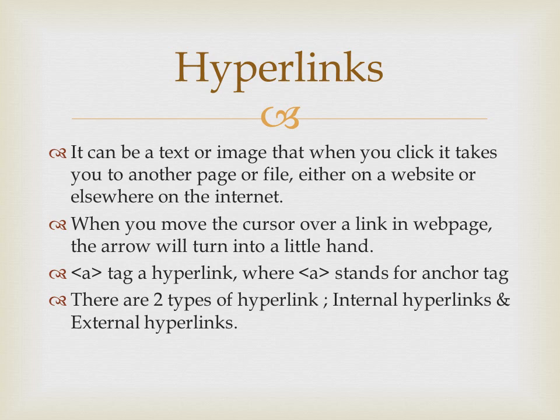If you want to know if something is a hyperlink, just move your cursor to it — the pointer will change into a hand. A little hand shows it is a hyperlink. For hyperlinks, the anchor tag — the A tag — is used. There are two types of hyperlinks: internal hyperlink, used to link a part of the same document, and external hyperlink, used to link one document with another document externally.